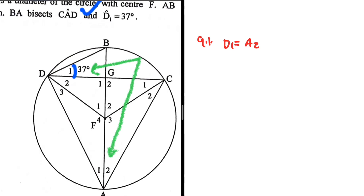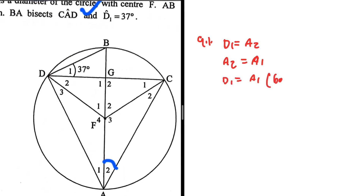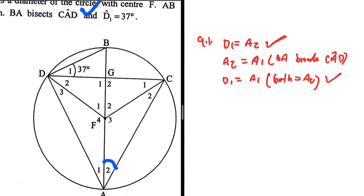It becomes difficult to see the other angle equal to D1, but if we pay attention to A2, we can conclude that A2 equals A1. So we're saying D1 equals A1 because they are both equal to A2. We say A2 equals A1 because BA bisects angle CAD. That gives us the second angle.